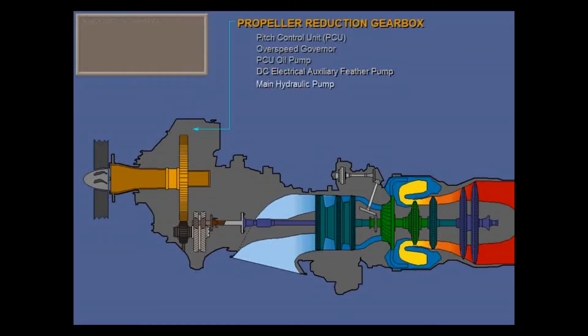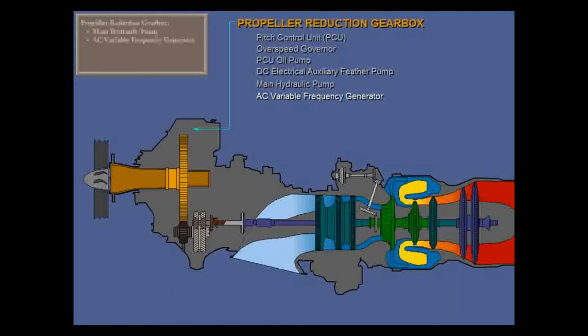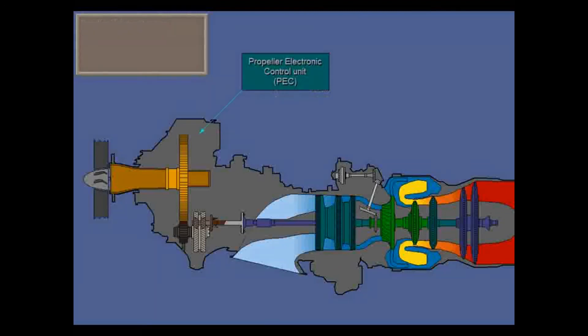Also driven by the prop reduction gearbox are the main hydraulic pump, part of the hydraulic system, and the AC variable frequency generator, part of the electrical system.